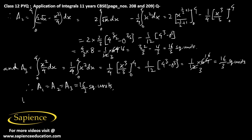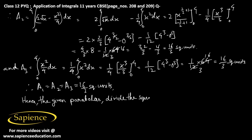Hence the given two parabolas divide the square region into three equal parts. That is proved.